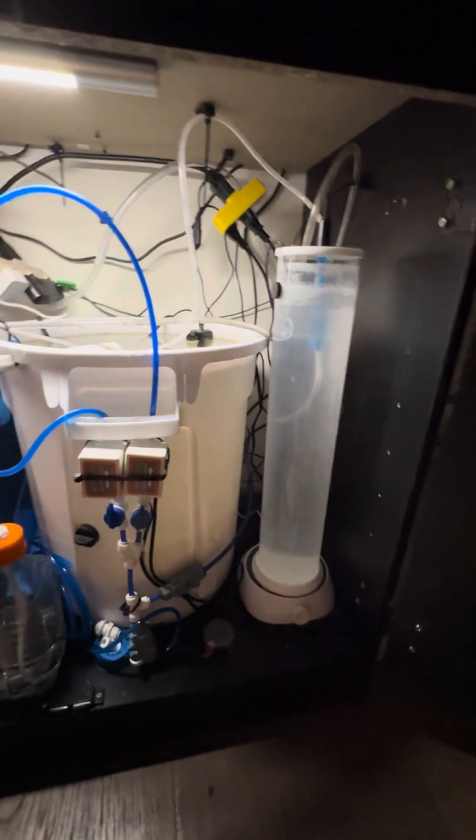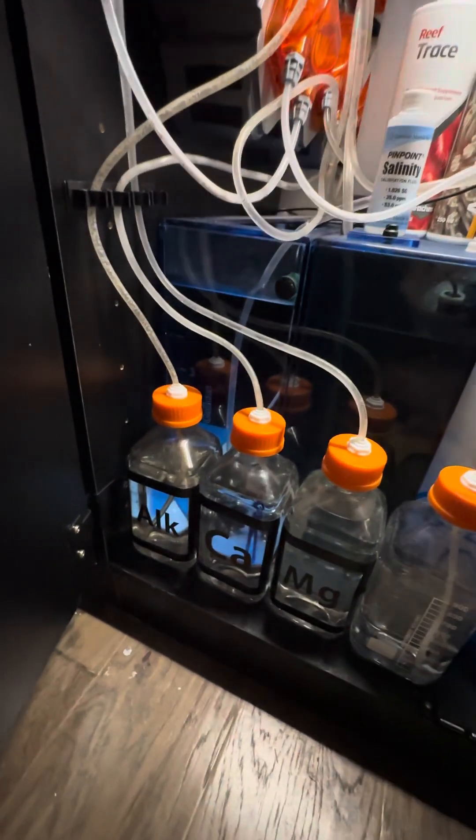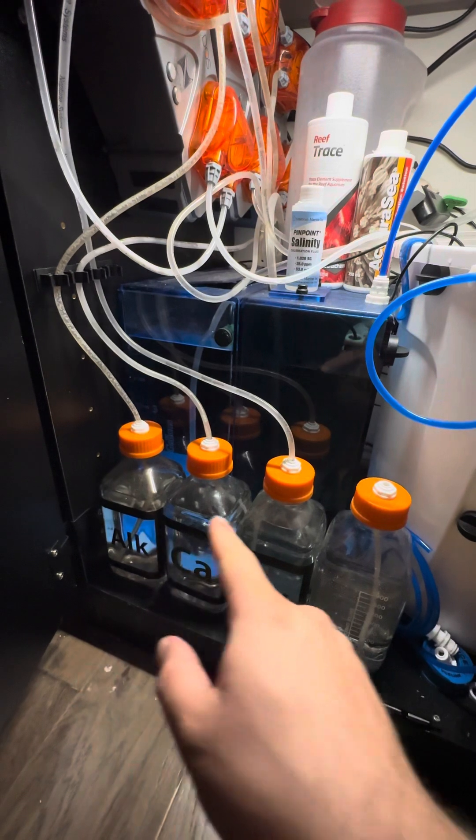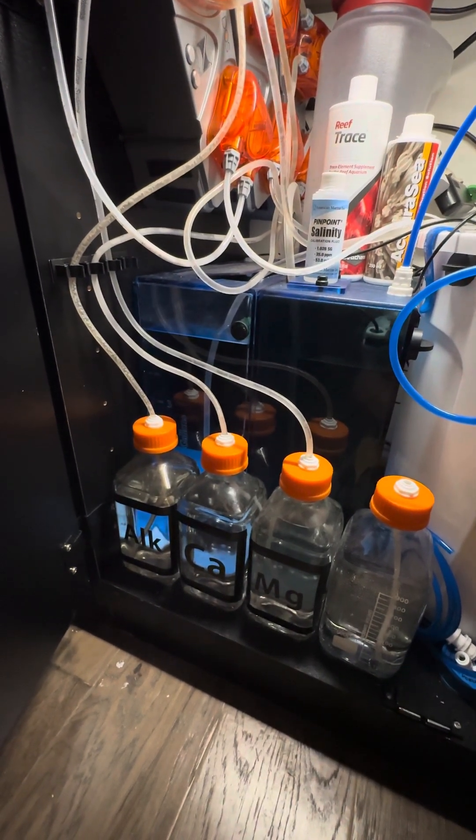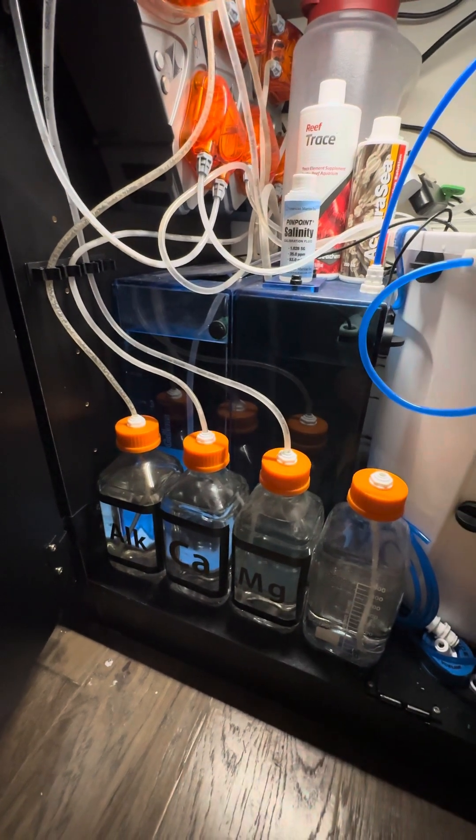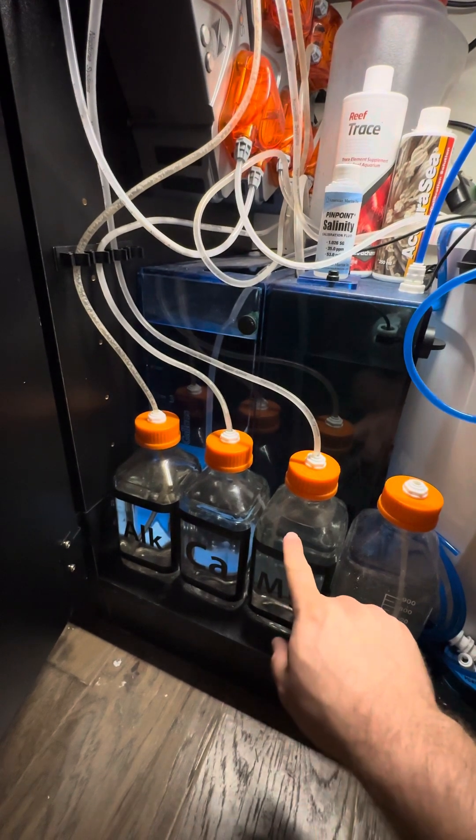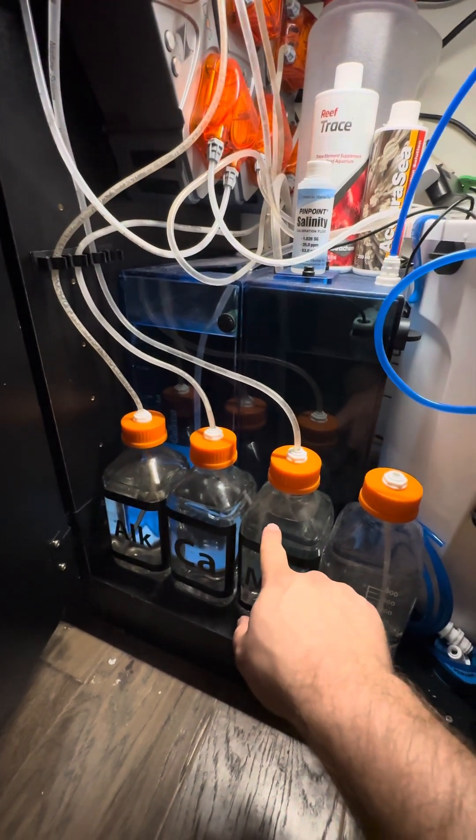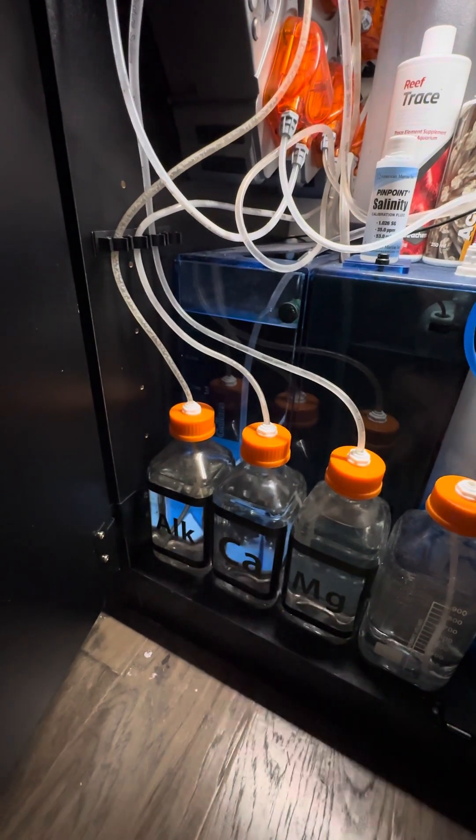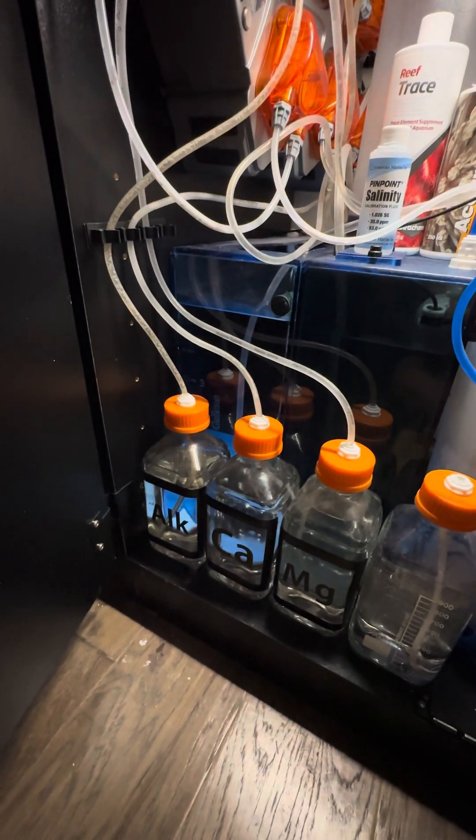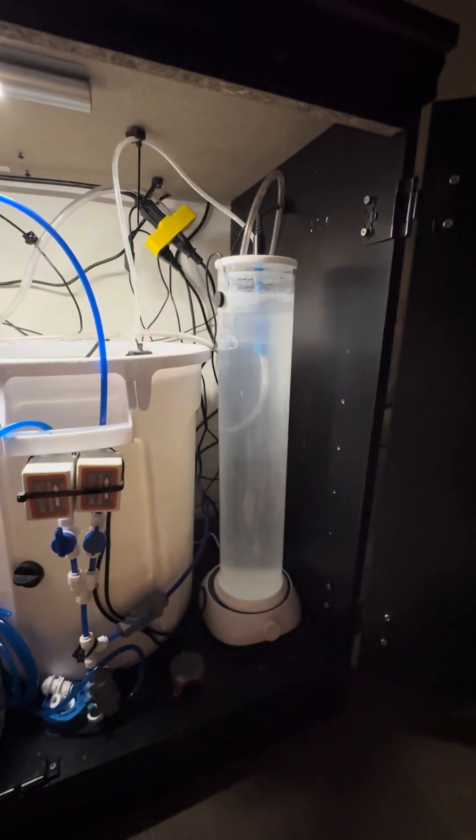Along with the pH spikes, I have also, and I didn't really consider this but it makes sense, my usage of BRS alkalinity, calcium, and magnesium, it's all gone down. I don't think it contains any magnesium, but my magnesium use is a little lower, my calcium usage is way lower, and my alkalinity usage is also significantly lower. I'm saving a lot of money on chemicals by just using BRS calc.